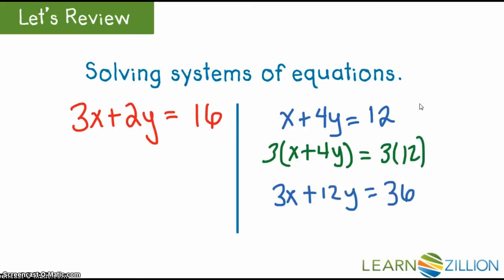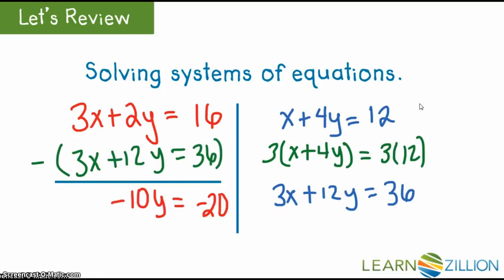Here, I have multiplied the second equation by 3. Subtracting the second equation from the first eliminates the x-terms, allowing me to solve the one-step multiplication equation for y.